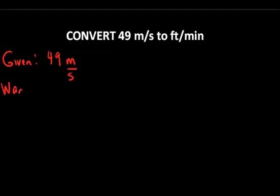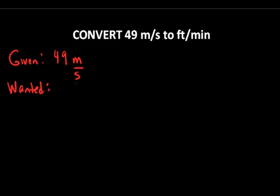Let's practice using our dimensional analysis to convert 49 meters per second into units of feet per minute. So first of all, we need to know what's given. In this case, what's given is 49 meters per second, and what's wanted is to express that value in units of feet per minute.